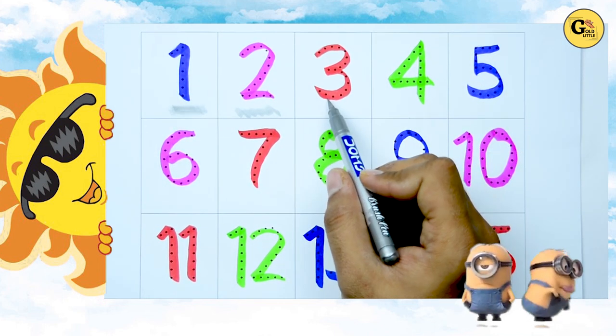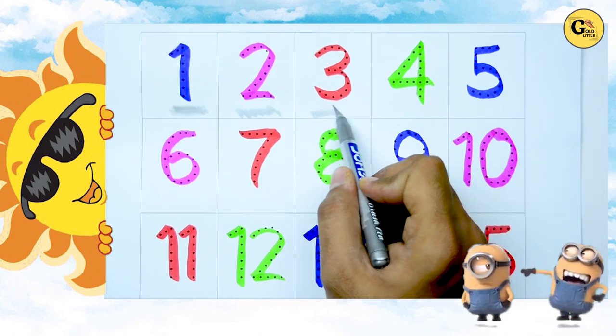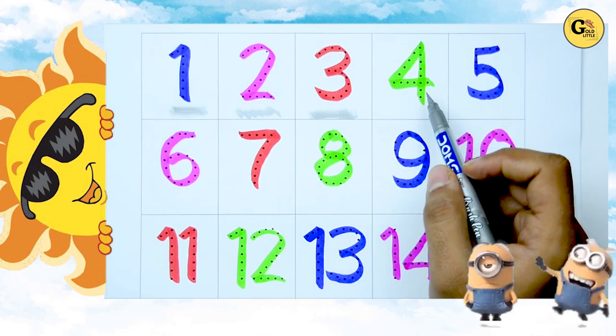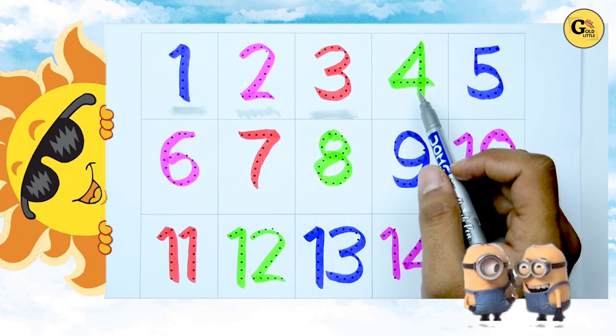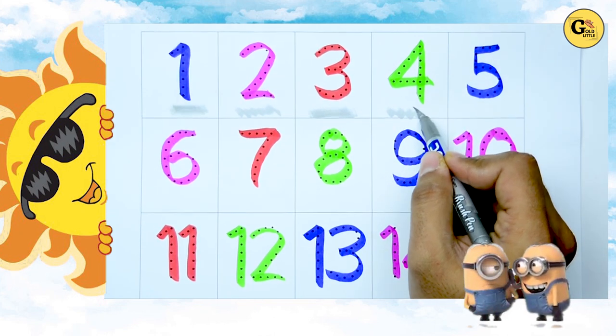3, which color? Red color, right. Green color, which number is this? It's 4.